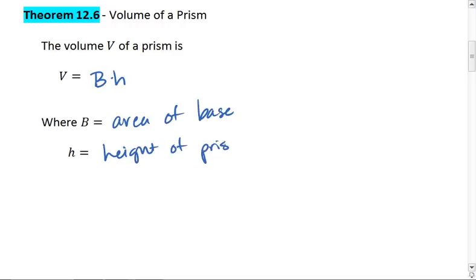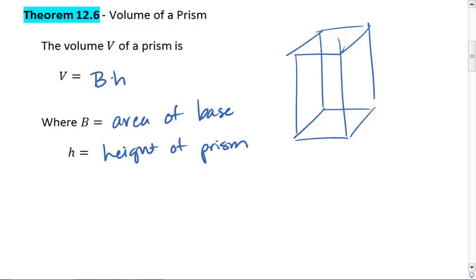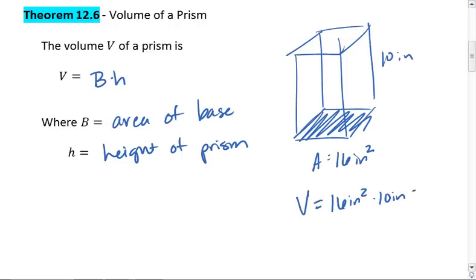So for example, if we had a square prism, we would find the area of the base. Let's say that area is 16 inches squared, and multiply it by the height. So the volume of this prism is 16 inches squared times 10 inches, which gives us 160 inches cubed.